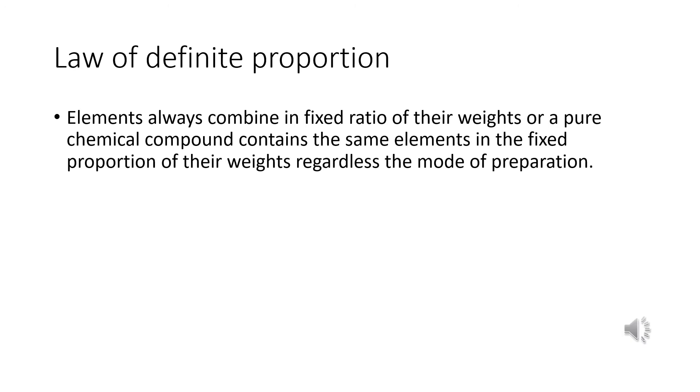Law of definite proportion. This law was proposed by a French chemist Joseph Proust. He says elements always combine in fixed ratio of their weights, or a pure chemical compound contains the same elements in the fixed proportion of their weights regardless of the mode of preparation. For example, water always contains 1 is to 8 ratio of hydrogen and oxygen by weight.